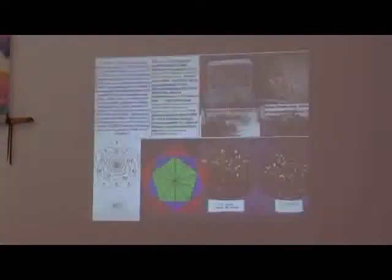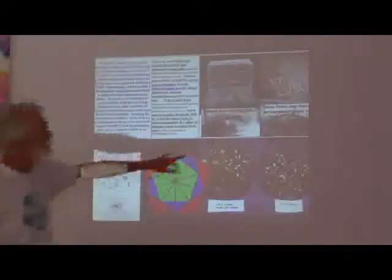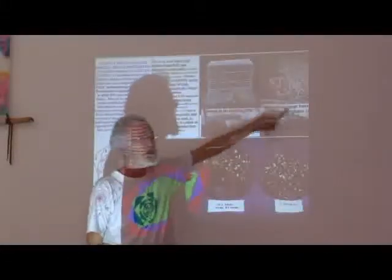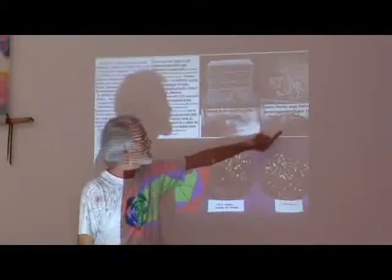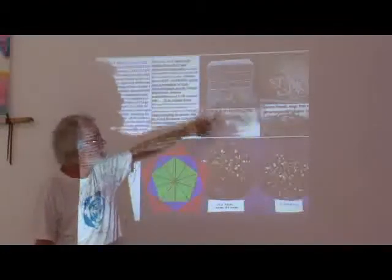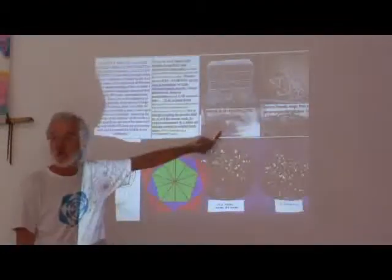So once you know how to make that electric field, here's some of the experiments we did. You put the seeds in paramagnetic stone geometry, they grow. You put the seeds in metal, they die. Very simple.